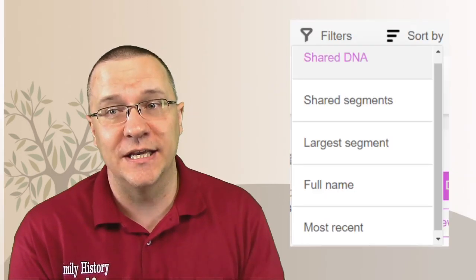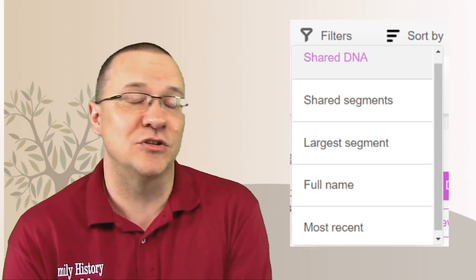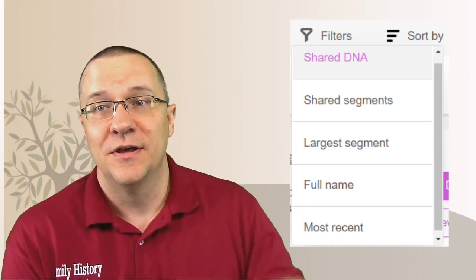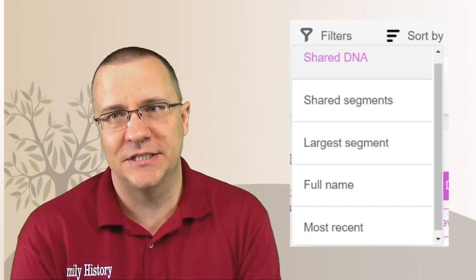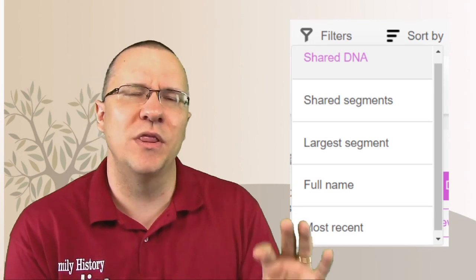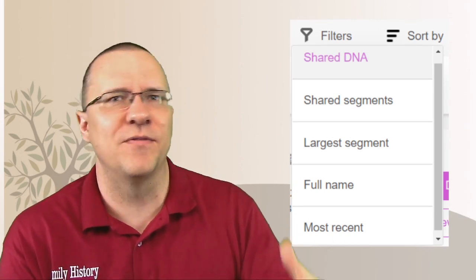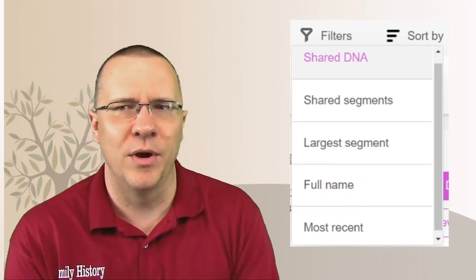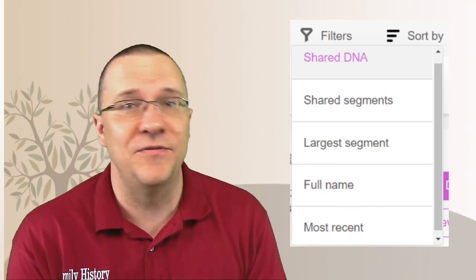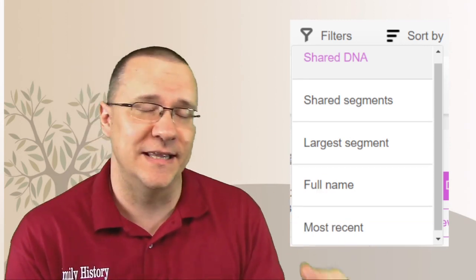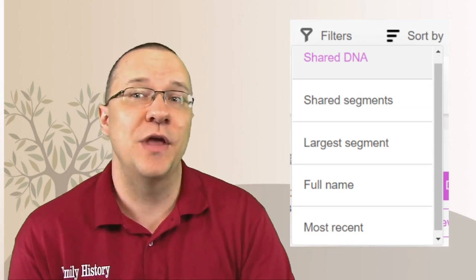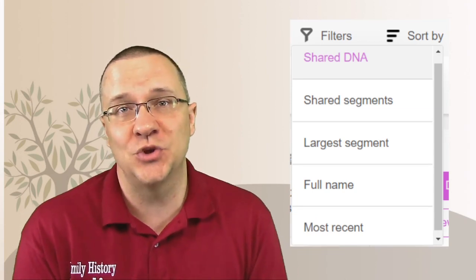Over on MyHeritage, they have four different ways that you can actually sort your matches. There is the shared segments. This is the number of shared segments. There is the largest segment. This is the one that probably most people think of. This would be from your closest relatives going back down. There is the full name if you wanted to actually sort people by their name. And then there is the most recent. This is similar to what Ancestry has. So there are actually some more options to sort in MyHeritage than in Ancestry, which means MyHeritage is going to win this round.